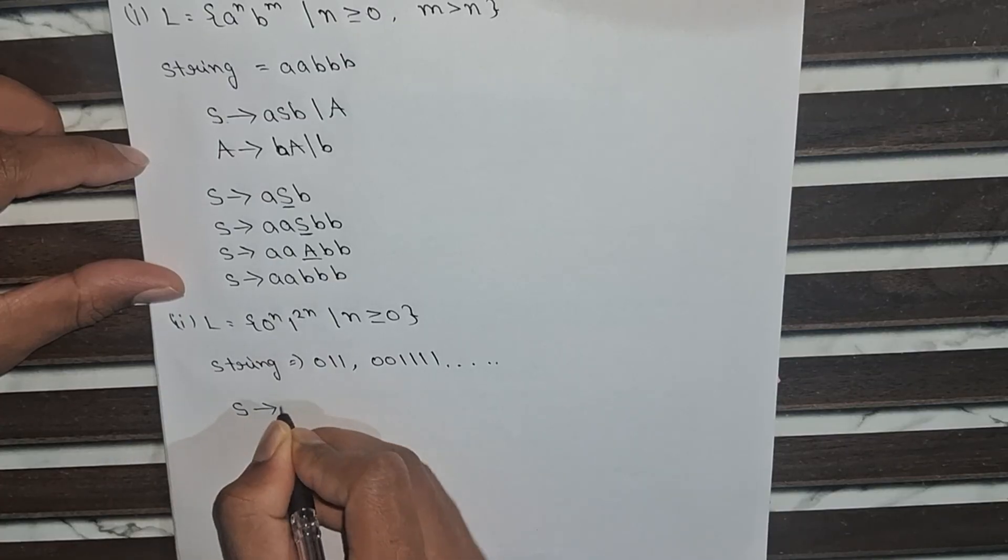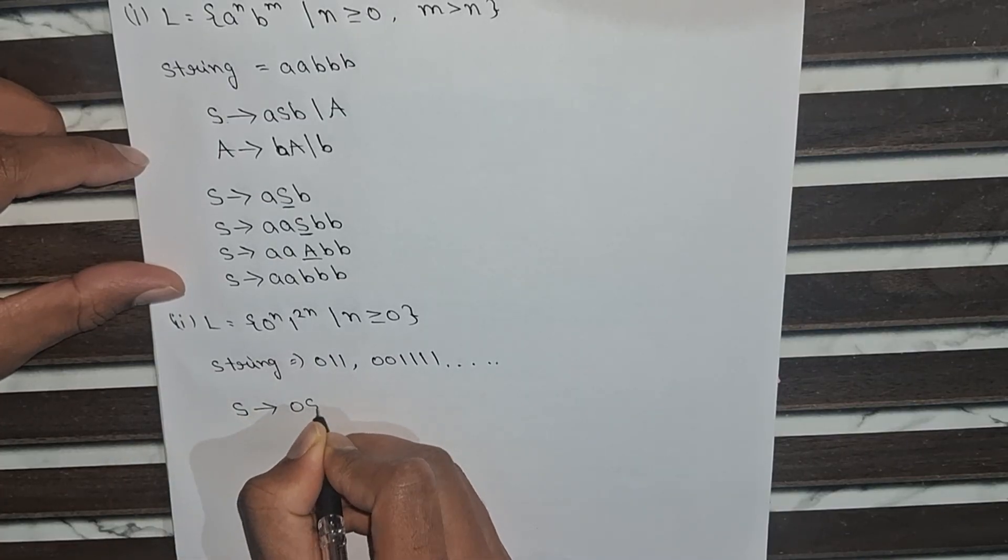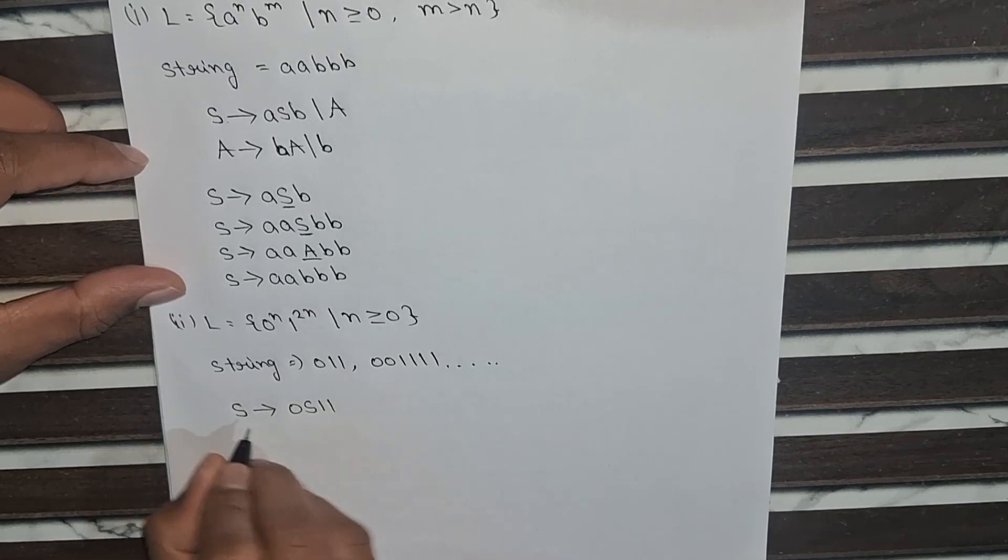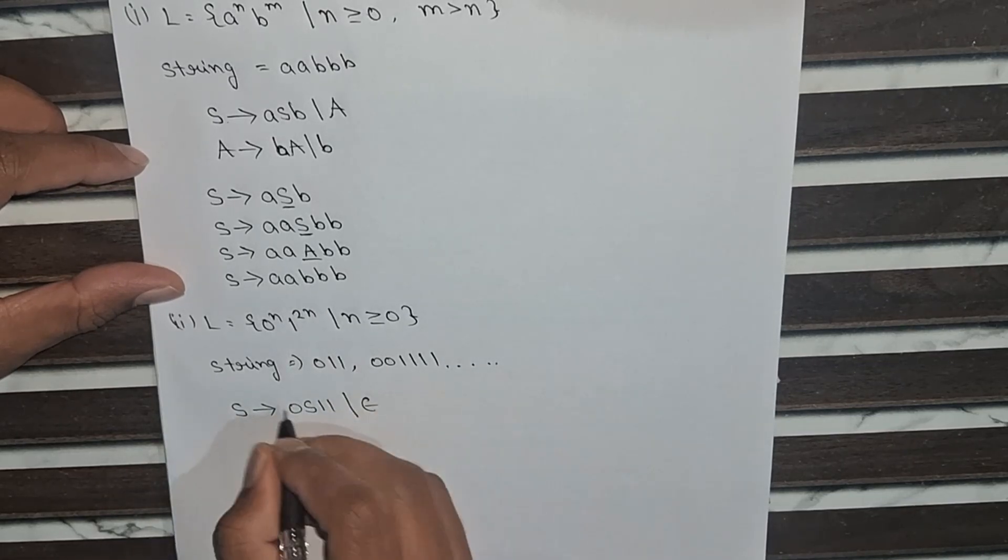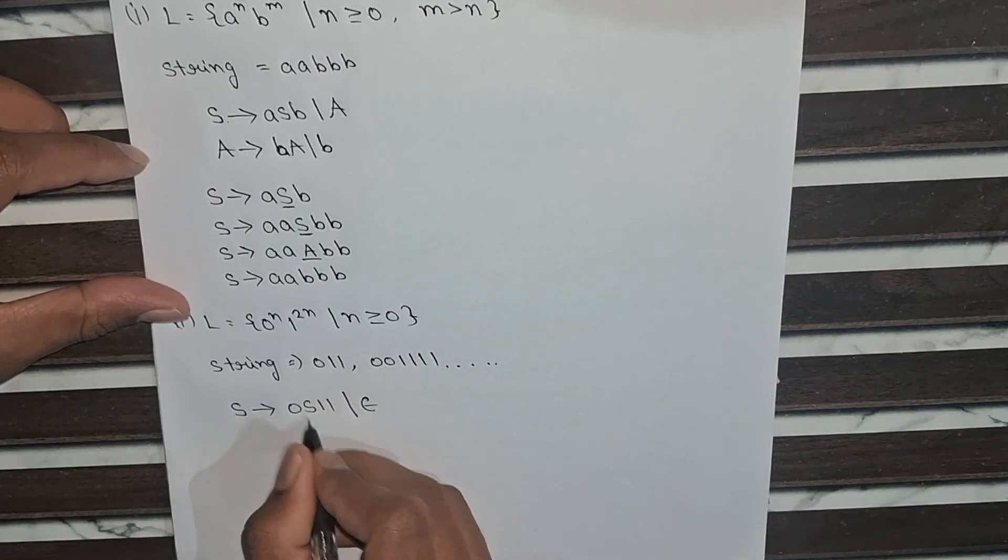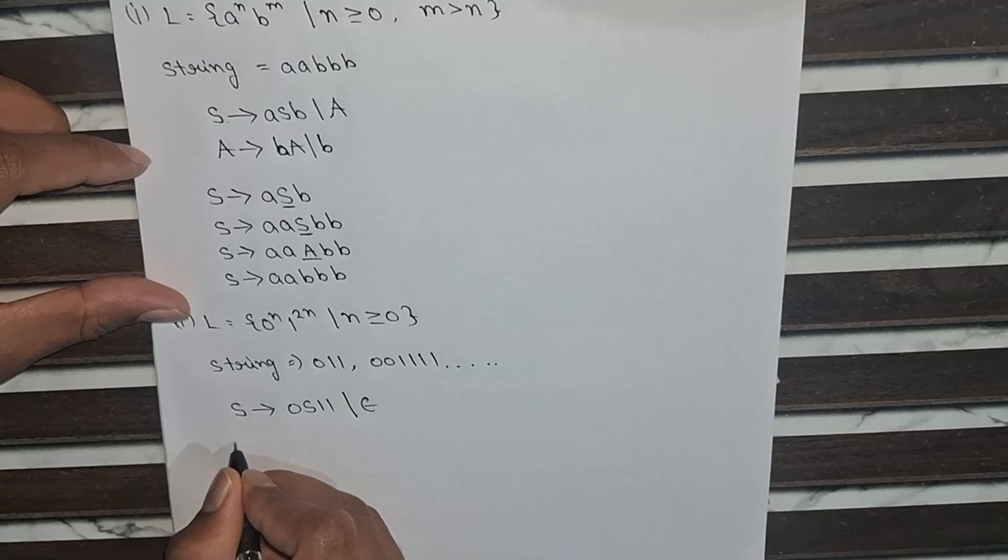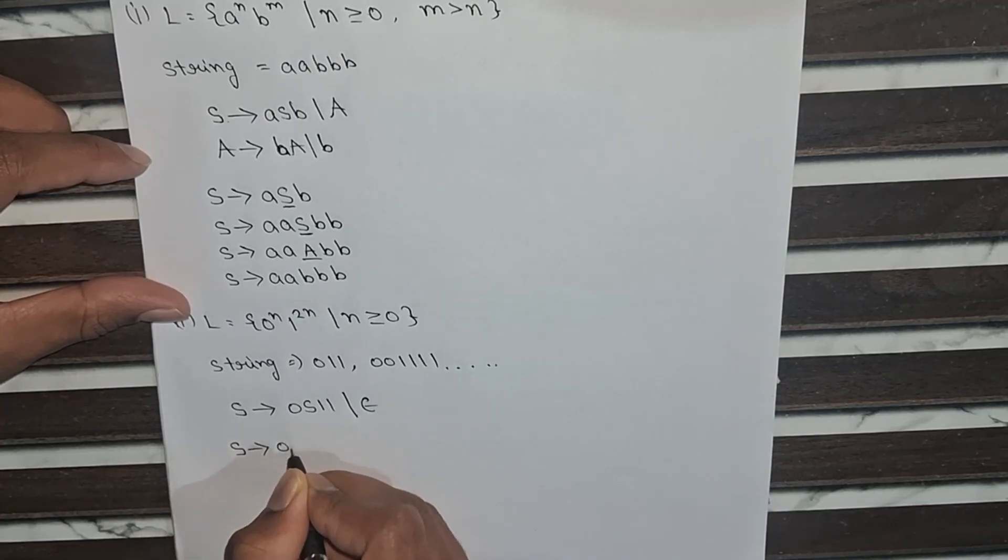So firstly we will write S starting and then we will call 0 S 1 1. This is the proper string and now we will substitute S as epsilon for removing this S. Now we will trace this string with this CFG. So how will we do this? Firstly we will call S equals 0 S 1 1, this one.